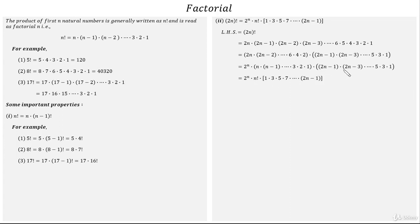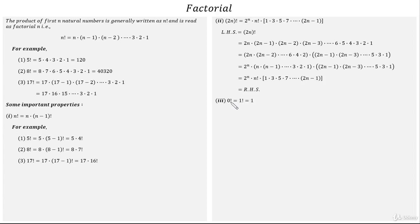The odd factors in the bracket can be written as 1 into 3 into 5 into 7 till (2n-1), and this is entirely equal to the RHS of property 2. Property 3: 0 factorial equals 1 factorial equals 1, that is factorial 0 equals factorial 1 equals 1.